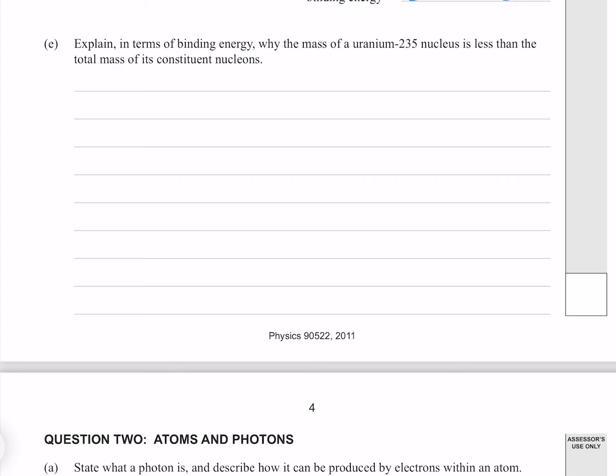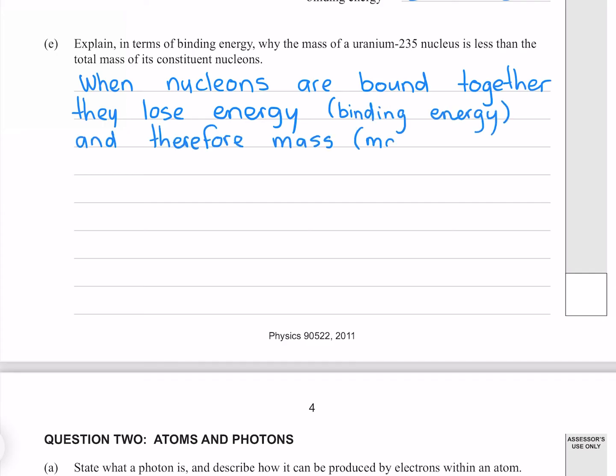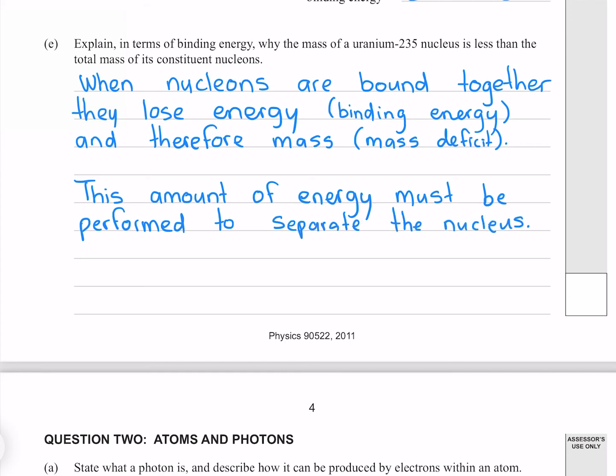Explain in terms of binding energy, why the mass of a uranium-235 nucleus is less than the total mass of its constituent nucleons. When nucleons are bound together, they lose energy, binding energy, and therefore mass, mass deficit. This amount of energy must be performed to separate the nucleus.